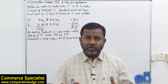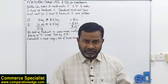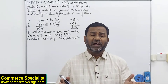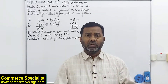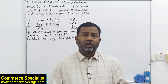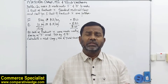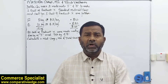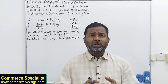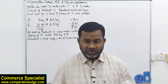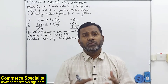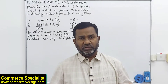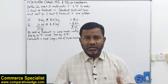Without further ado, let's jump into the topic. Material usage, mix, and yield variances — when we calculate material usage variance, it is further divided and explained through mix and yield variances. Material usage variance means if you are supposed to use X quantity of material and you end up using Y quantity, the difference is known as material usage variance. It can be further explained by calculating sub-variances: mix and yield.